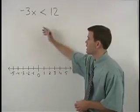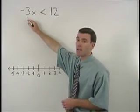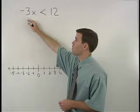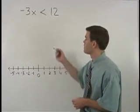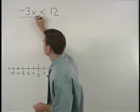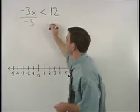In this problem, since x is being multiplied by negative 3 on the left side of the inequality, to get x by itself, we divide both sides by negative 3.